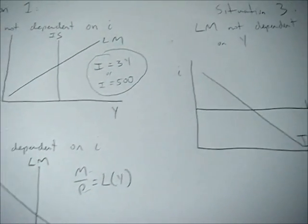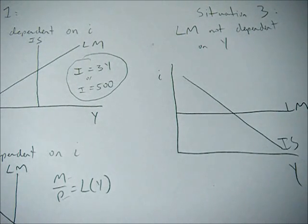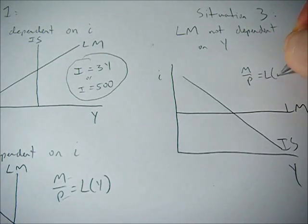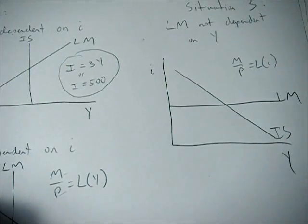Finally, situation 3, we have the LM curve is not dependent on Y. So we get this horizontal LM curve, and that would be if we had something like M over P equals L as a function of the interest rate only.